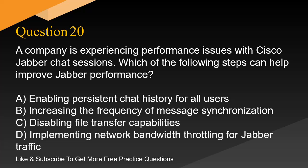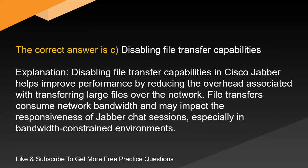Question 20. A company is experiencing performance issues with Cisco Jabber chat sessions. Which of the following steps can help improve Jabber performance? A. Enabling persistent chat history for all users. B. Increasing the frequency of message synchronization. C. Disabling file transfer capabilities. D. Implementing network bandwidth throttling for Jabber traffic. The correct answer is C. Disabling file transfer capabilities. Disabling file transfer capabilities in Cisco Jabber helps improve performance by reducing the overhead associated with transferring large files over the network. File transfers consume network bandwidth and may impact the responsiveness of Jabber chat sessions, especially in bandwidth-constrained environments.